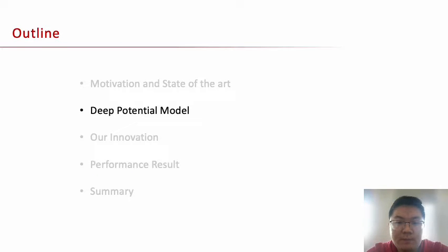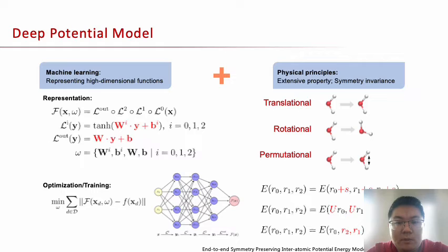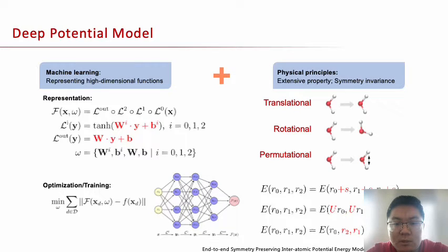Now I will introduce the deep potential model. The main idea of the deep potential model is to combine machine learning methods with physical principles. It adds a mathematical transformation to ensure physical symmetries such as translational, rotational, and permutational invariances while using a neural network.